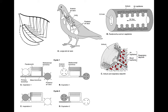Inside the tubes, air flows in only one direction — birds have the only system in terrestrial vertebrates of unidirectional airflow. Air flows one way through the parabronchi, and that's when gas exchange occurs with the air capillaries. Even though there are five air sacs, you can model it as just two: the posterior air sacs and the anterior air sacs closer to the head.